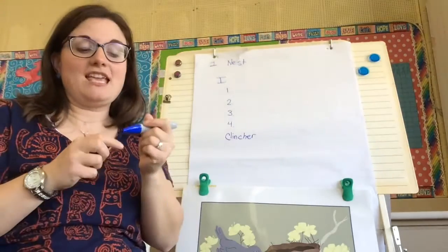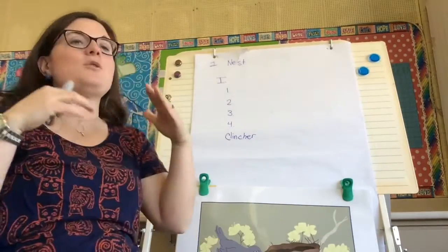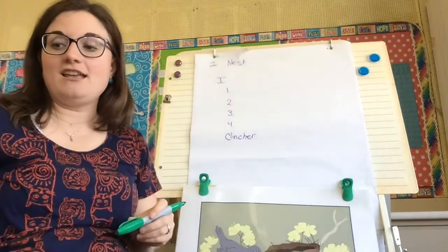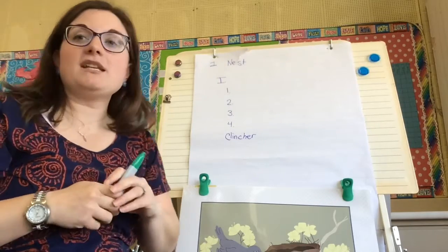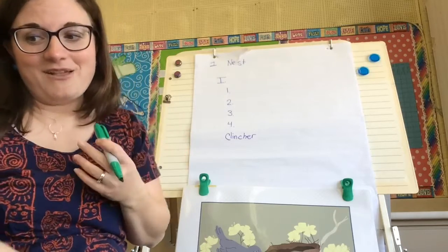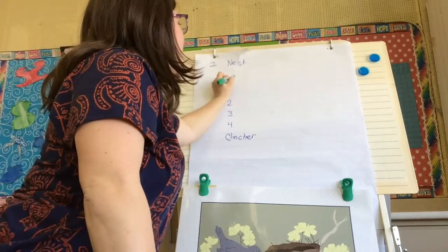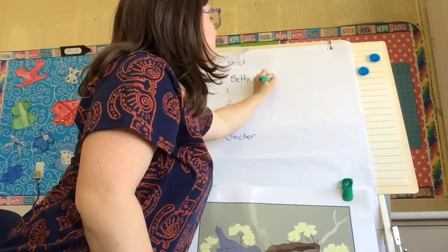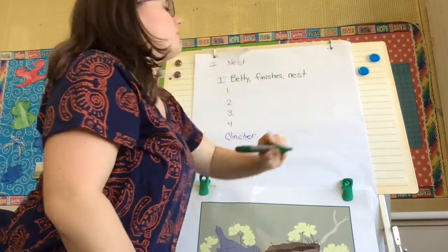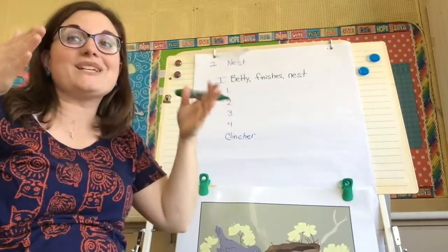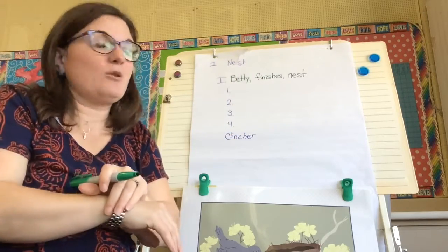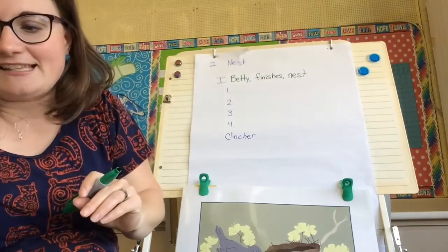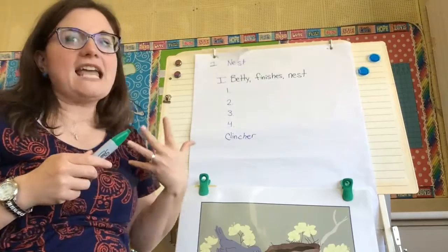If you would like to change some things up to make it yours, you're welcome to do that, just like we do in the classroom. If you want to pick a different name or describe something a little bit different, that's fine. The first thing is going to be about the bird finishing or building the nest. I'm going to give my bird a name — you can choose your own. I'm going to say Betty. So for Roman numeral one I'm going to write 'Betty finishes nest.' Remember, the Roman numeral one is exactly what you can see in the picture — you can just add the name if you'd like.